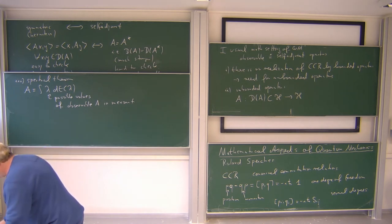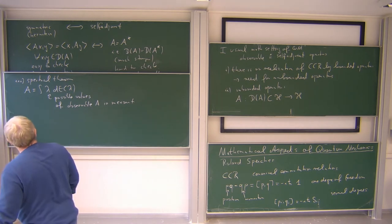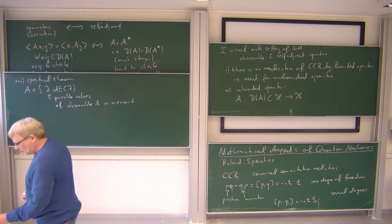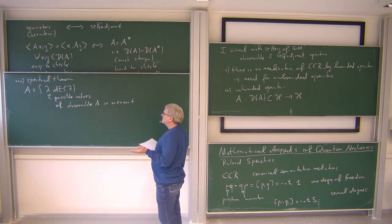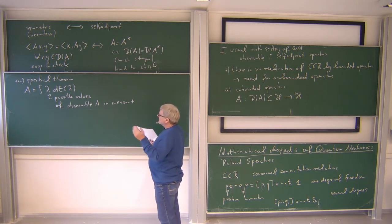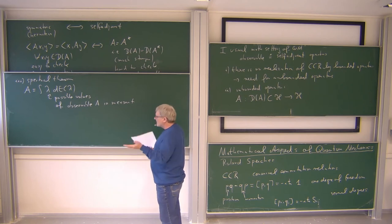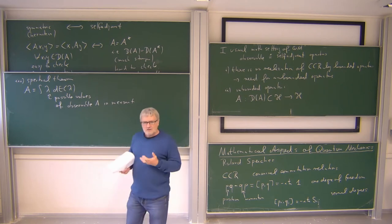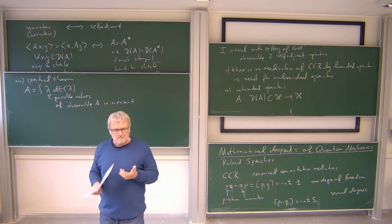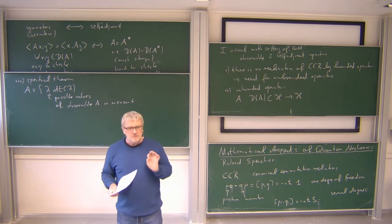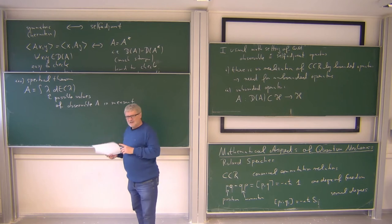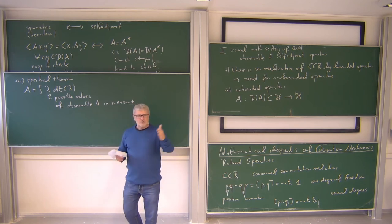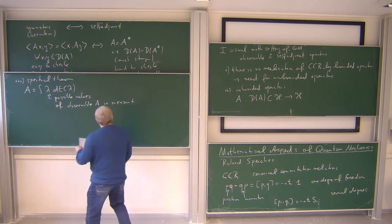The lambdas in the spectral decomposition are the possible values of the observable A when doing a measurement. This spectral theorem is the most important mathematical statement about self-adjoint operators, also in the unbounded case, and it has a concrete physical meaning: it tells us which values can result from a measurement corresponding to the self-adjoint operator A.